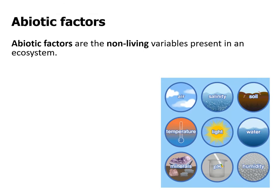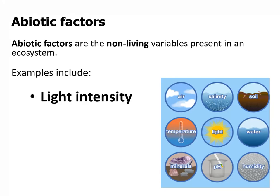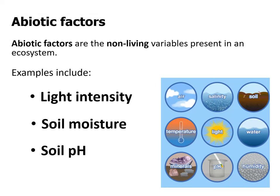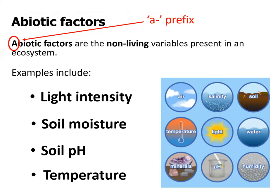Now we're going to look at abiotic factors — these are the non-living variables, the non-living factors that can influence where an organism is able to live. Examples include light intensity, soil moisture, soil pH, and temperature. The prefix 'a' comes from Greek and means 'not' or 'without', giving the word the opposite meaning. So 'abiotic' simply means non-living, just as 'atypical' means not typical, 'asexual' means not sexual, or 'asymmetrical' means not symmetrical.